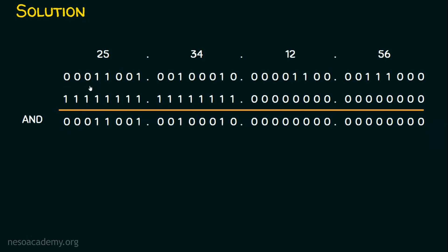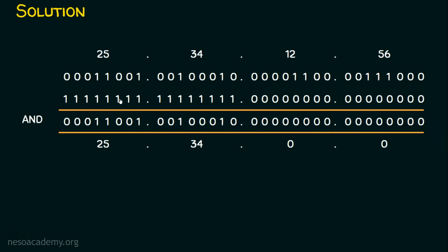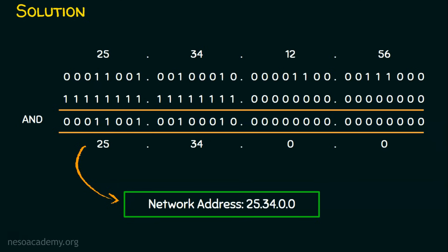In the AND operation: 0 AND 1 is 0, 1 AND 1 is 1, and if any input is 0, the output is 0. Only when both inputs are 1 do we get 1. After performing the AND operation and converting the binary result to decimal: 16 + 8 + 1 = 25 for the first octet, 34 for the second, and 0 for the third and fourth octets. The result is 25.34.0.0, which is the network address.